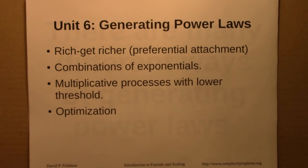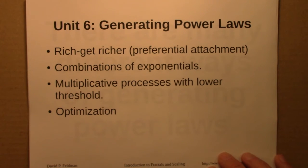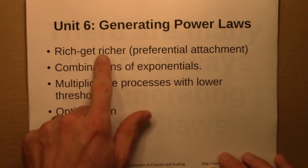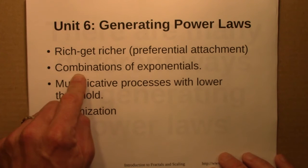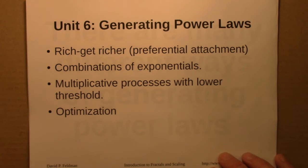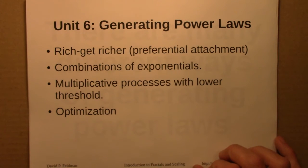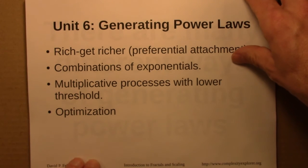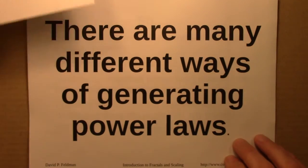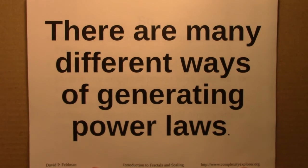Then in Unit 6, we asked how would one generate power laws — what are some processes that generate power law distributions? This was similar to Unit 2 when we looked at processes that generate fractals, and the take-home message is the same: there are many different ways of generating power laws. We talked about rich-get-richer models, preferential attachment, certain ways of combining exponential distributions, multiplicative processes that have a lower threshold, and a couple of optimization schemes where a network designed to optimize certain qualities would naturally lead to something with a power law — something scale-free.